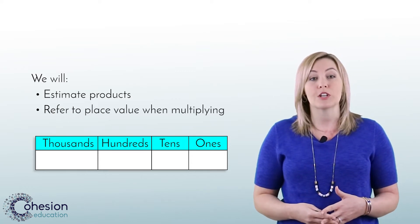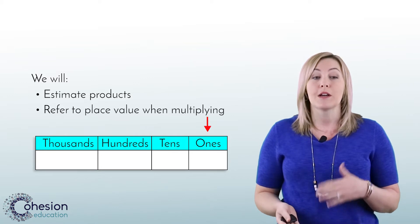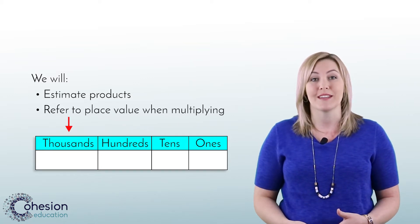Remember, the place value chart starts at the right with the ones, moves on to the tens, hundreds, thousands, and so on.